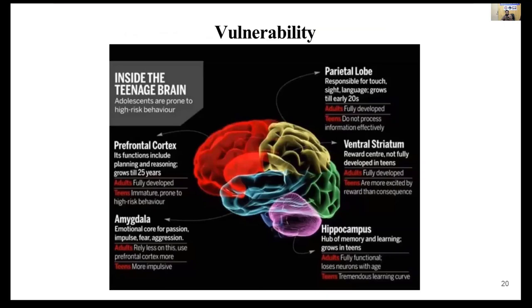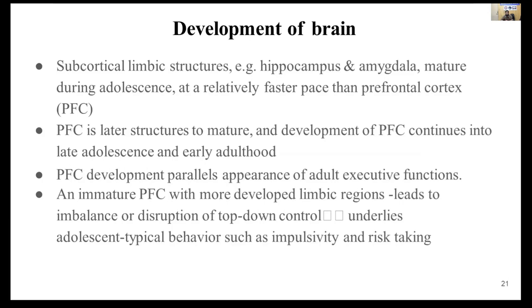Regarding vulnerability: brain maturation proceeds from posterior to anterior, so the posterior part develops first and the anterior part — including the prefrontal cortex — continues developing until around age 25. The subcortical limbic area matures much faster and much earlier than the prefrontal cortex. This immature prefrontal cortex combined with a more developed limbic system leads to an imbalance — the prefrontal cortex acts as the brake system. Without it fully functional, adolescents show typical behaviors such as impulsivity and high risk-taking.